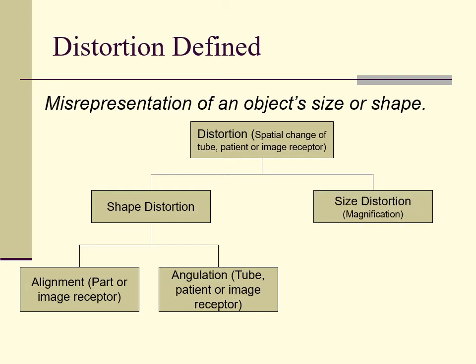The other major determinant of distortion is size distortion. All objects represented on radiographs are magnified to some degree. Size on a radiograph is limited to the image being larger than the object that produced it, which translates to magnification. Making an object smaller or minification is not possible.